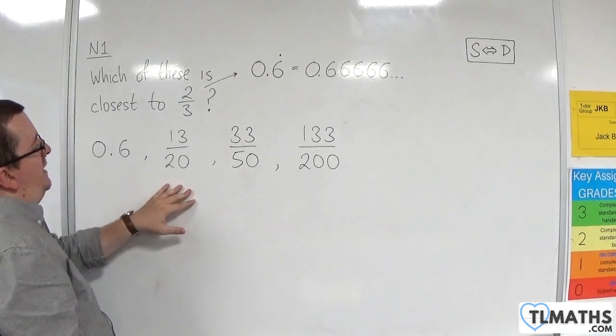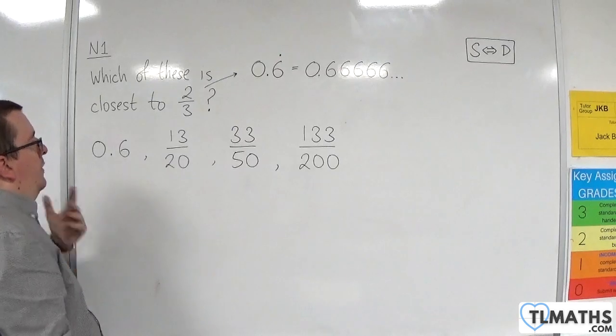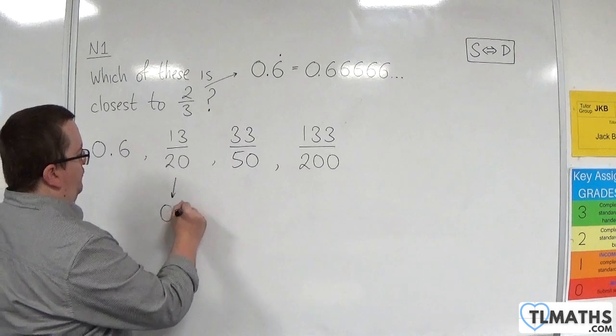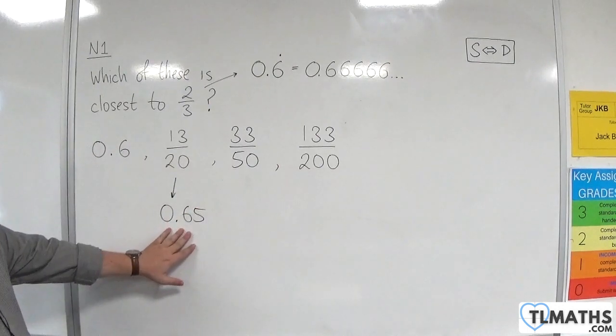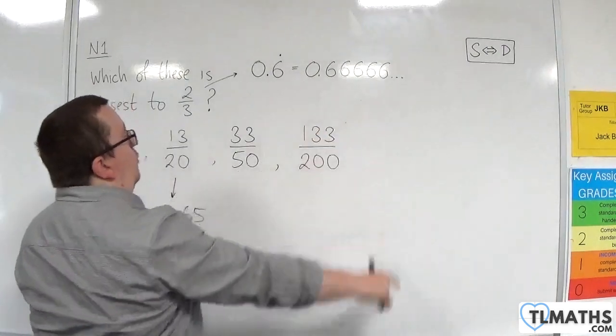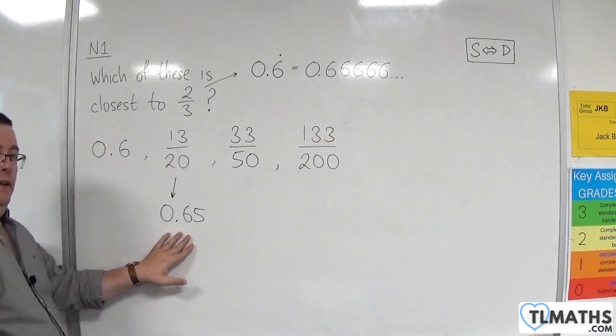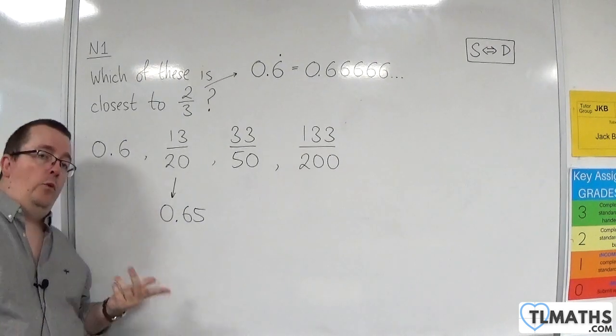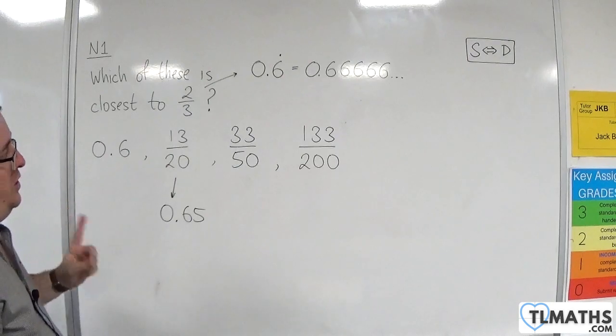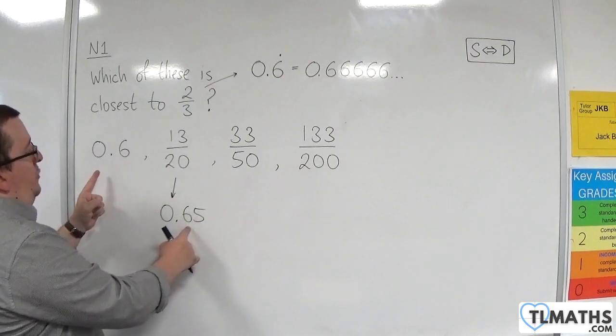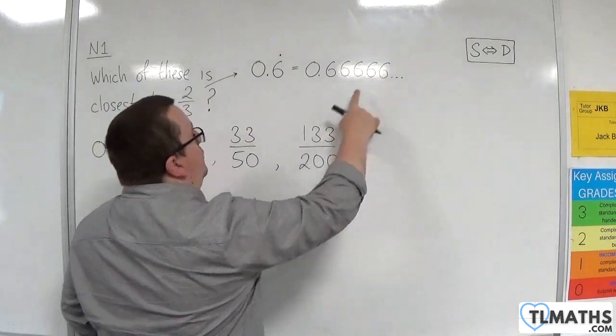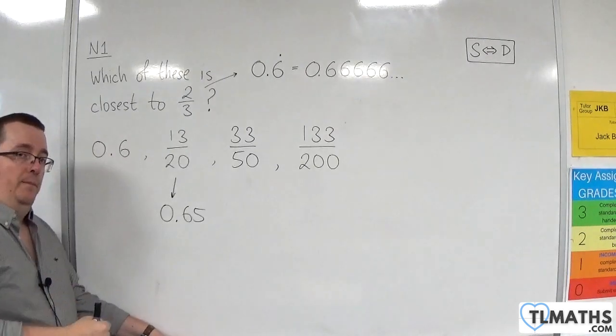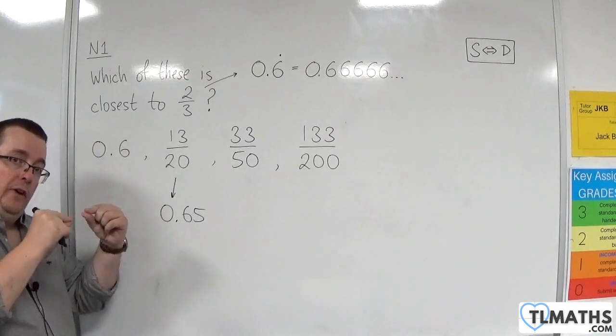13 over 20. Now, 13 over 20 is 0.65. Now, 0.65 is definitely closer to 0.6 recurring than 0.6 is. Now, if you weren't too sure which one was closest, the way that you could do it is you could subtract each of these from 0.6 recurring and see which one gives you the smaller number. The smaller the number, the closer they are.